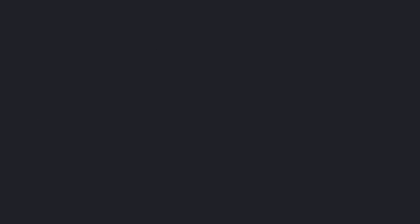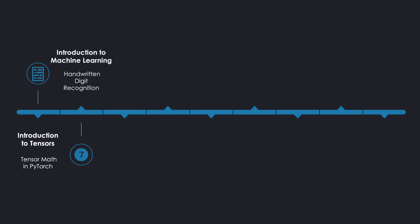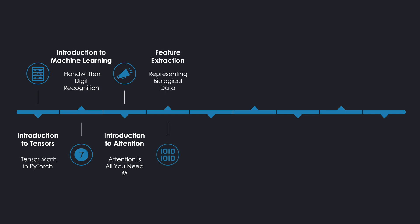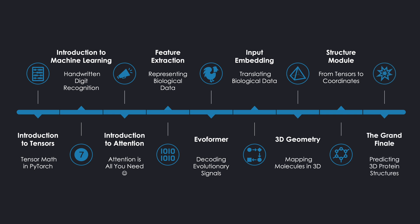This series is structured in nine parts, and it's designed so that you can go through it without any particular prerequisites, except general Python knowledge. In the first three videos, we'll go through a full introduction to the most important parts of machine learning, with an introduction to tensors, the basic building blocks of ML, an introduction to machine learning in general, and the attention mechanism. After that, we start with the AlphaFold-specific content: feature extraction, the Evoformer, feature embedding, a video on advanced three-dimensional geometry, the structure module, and finally putting all the parts together.